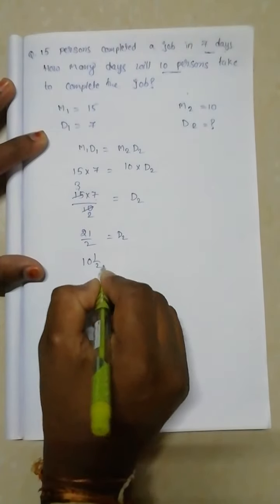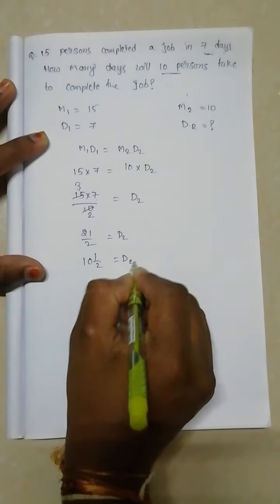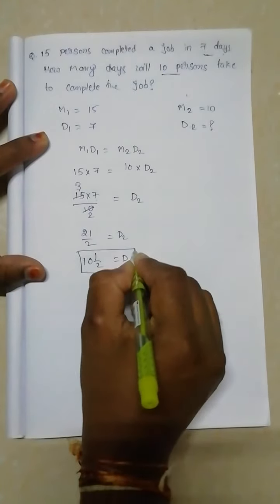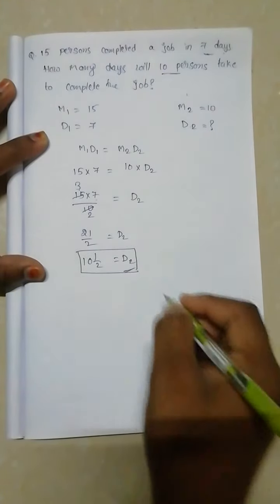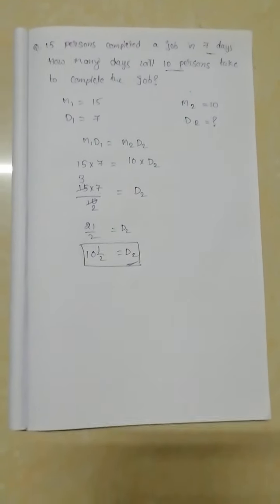21 by 2 can be written as 10 whole 1 by 2 days. That means to complete the same work with 10 persons, they require 10 and a half days.